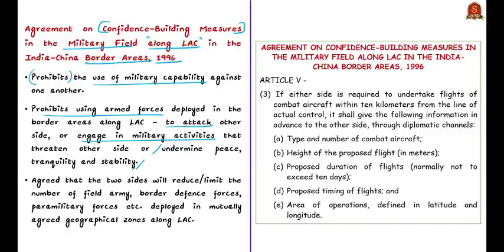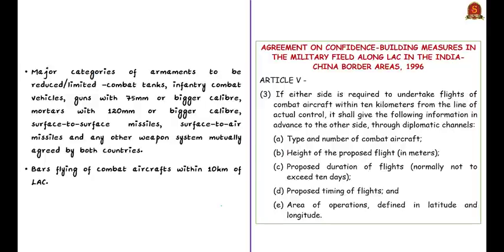The 1996 agreement agreed that both sides would reduce or limit the number of field army, border defence forces, paramilitary forces, etc., deployed in mutually agreed geographical zones along the LAC. Major categories of armaments are also to be reduced or limited, including combat tanks, infantry combat vehicles, guns with 75mm or bigger caliber, mortars with 120mm or bigger caliber, surface-to-surface missiles, surface-to-air missiles, and any other weapon system mutually agreed by both countries.